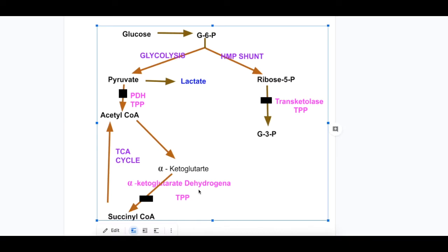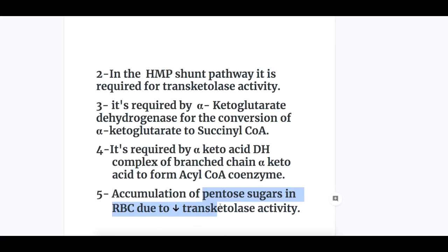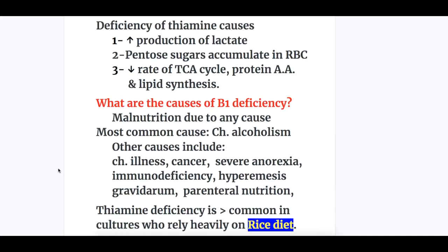In the TCA cycle, TPP is required for the activation of alpha-ketoglutarate dehydrogenase, which converts alpha-ketoglutarate to succinyl-CoA. It is also required by the alpha-keto acid dehydrogenase complex of the branched-chain alpha-keto acids to form acyl-CoA. Additionally, accumulation of pentose sugars occurs in the RBC due to decreased transketolase activity.